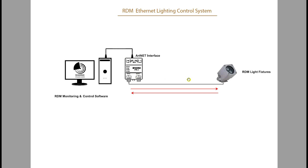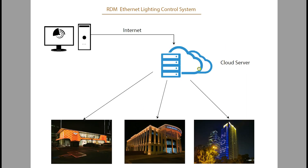With RDM, the signal can travel from the computer to the light and also back from the light to the computer — that is why it is called a two-way signal. The cloud-based system is now widely used when you have multiple projects in different locations and want to control them all from one computer. This is done through a 4G connection and cloud server software.